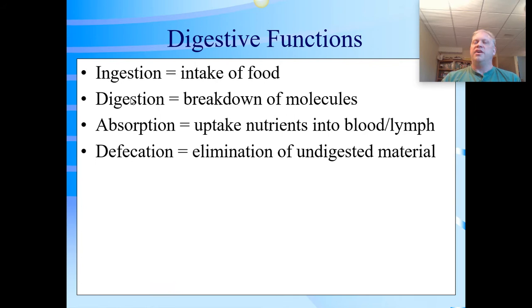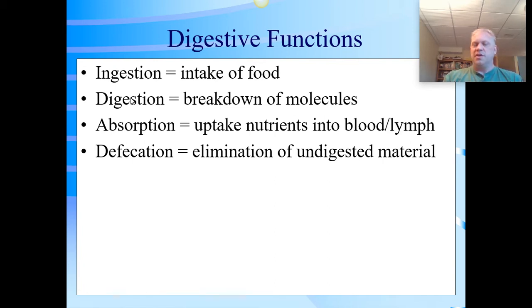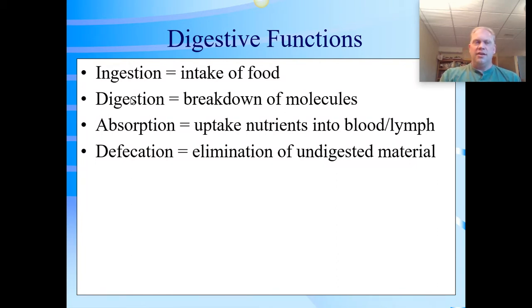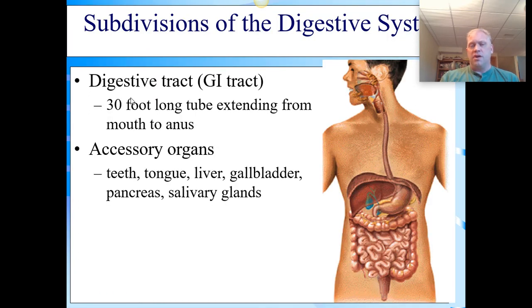We then absorb the nutrients — that's kind of the point, to take those nutrients and absorb them into our systems. All chemical absorption takes place in the small intestine, and water absorption takes place in the large intestine. Then once it gets past that point, we have to defecate — remove those undigested materials. Otherwise it becomes toxic; it could actually be a poison to us. So there are four main phases, and you'll have to talk about what happens in each phase with each nutrient.